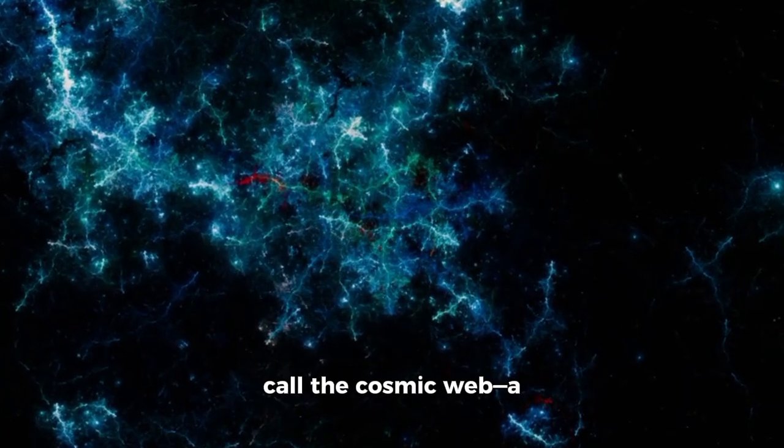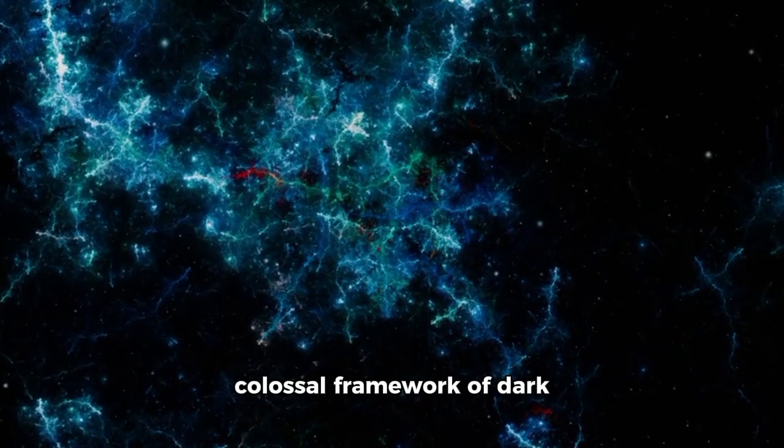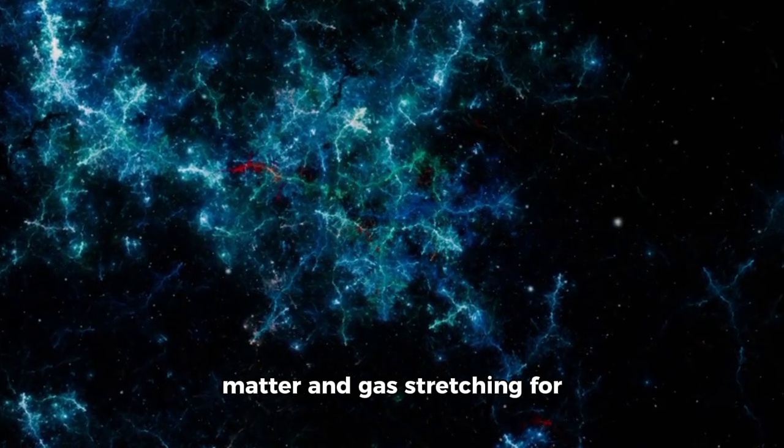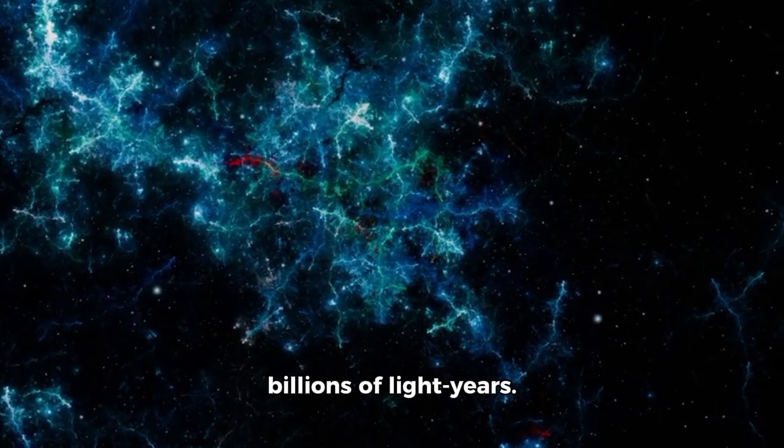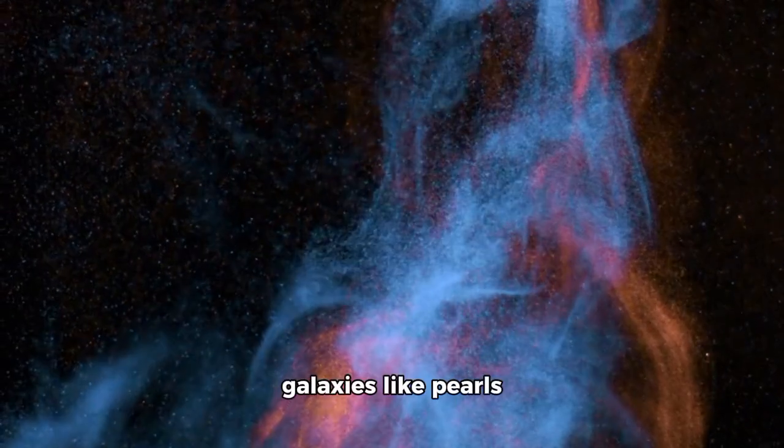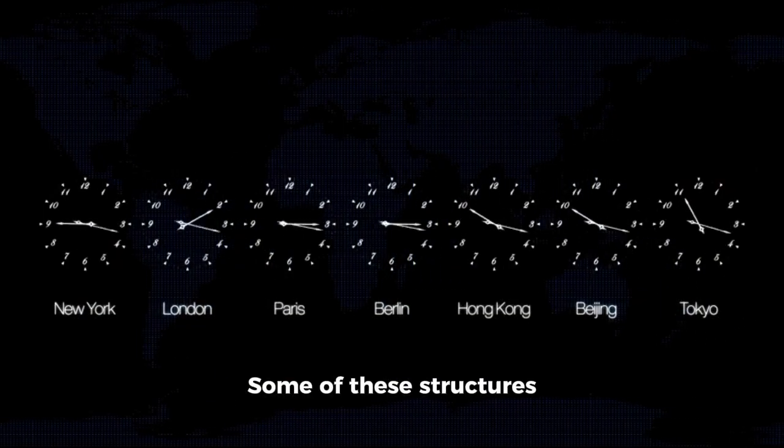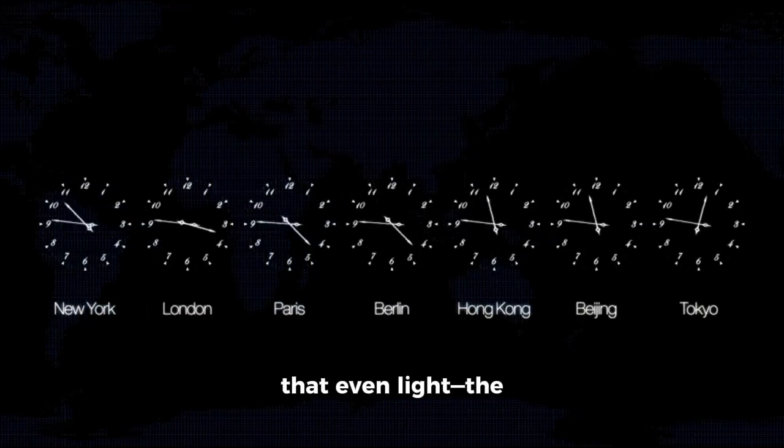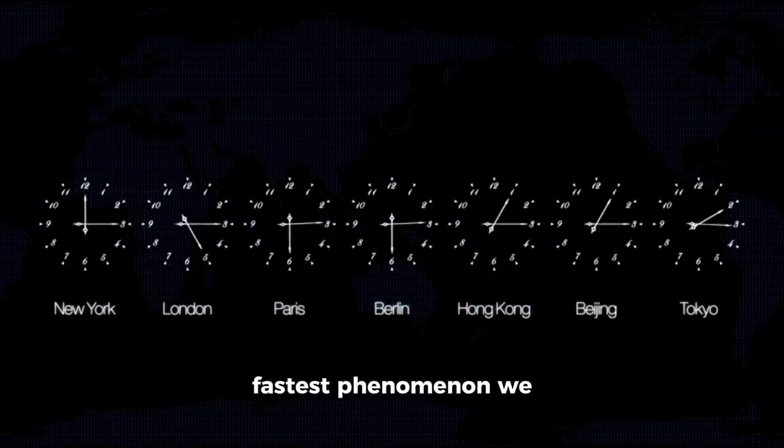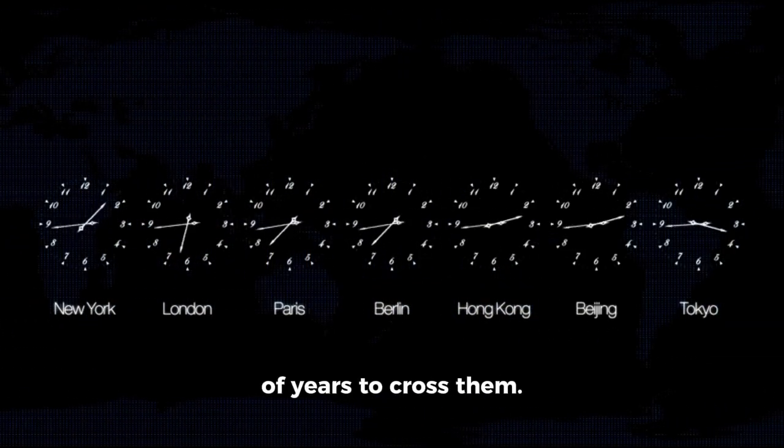This is what astrophysicists call the cosmic web, a colossal framework of dark matter and gas stretching for billions of light years. Filaments connect galaxies like pearls hung from a cosmic chain. Some of these structures span distances so vast that even light would take billions of years to cross them.